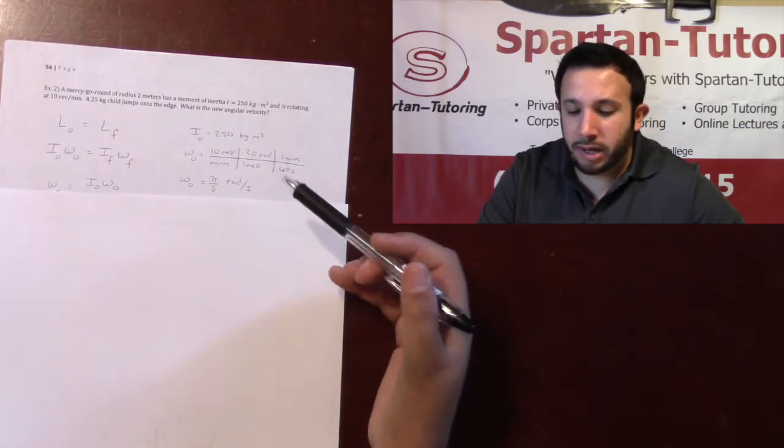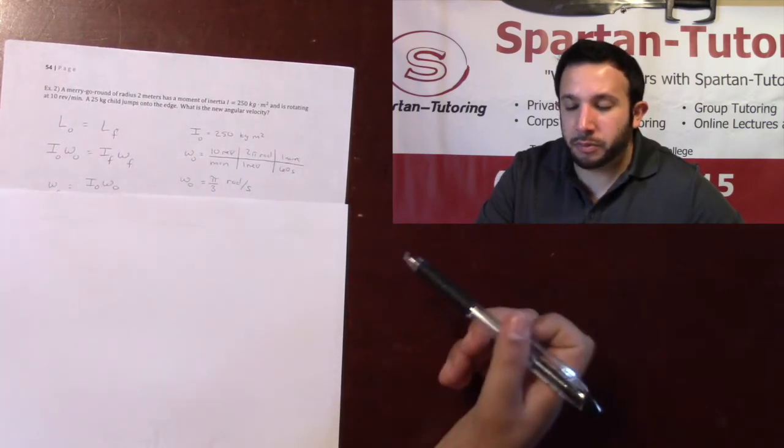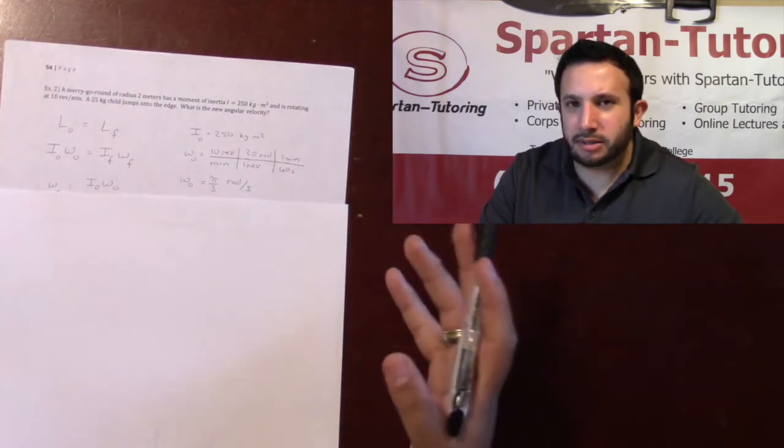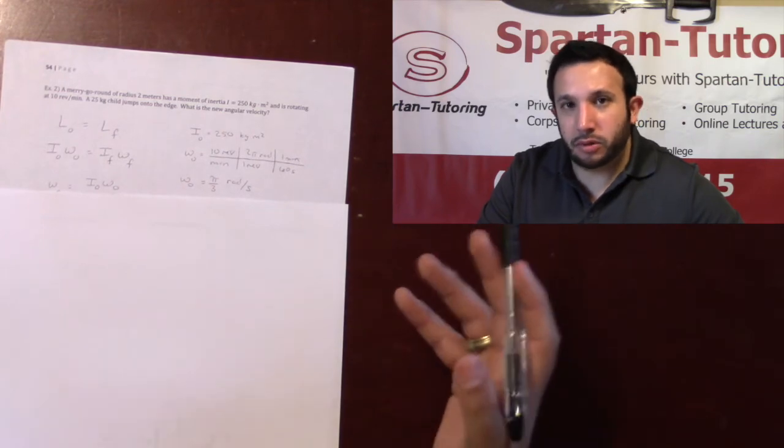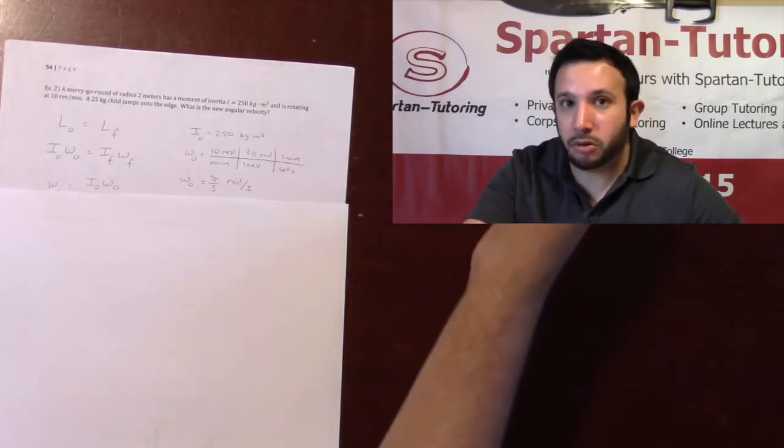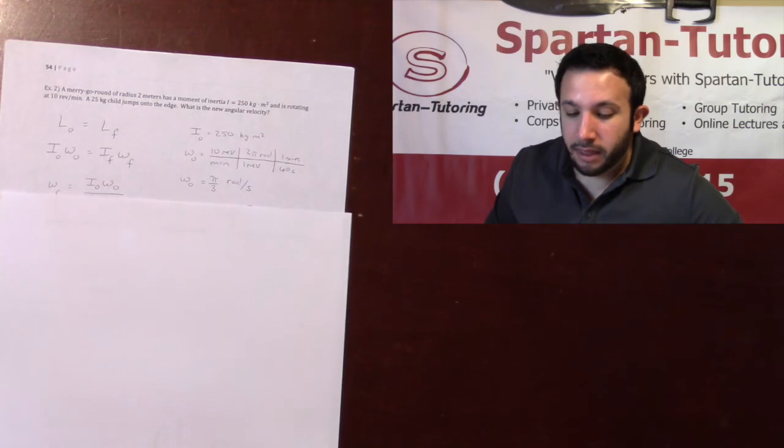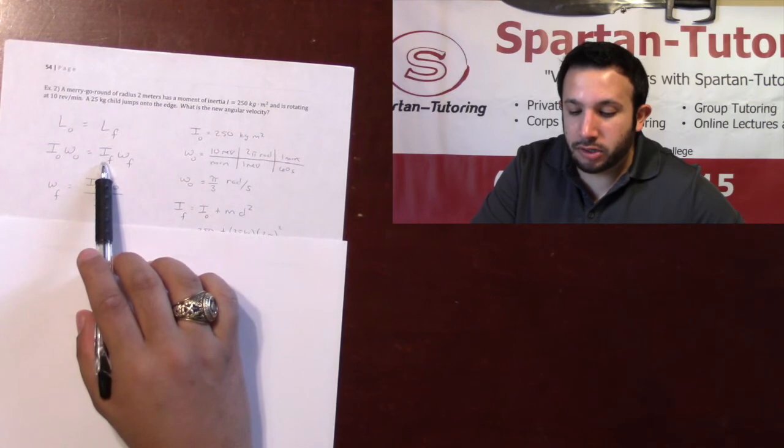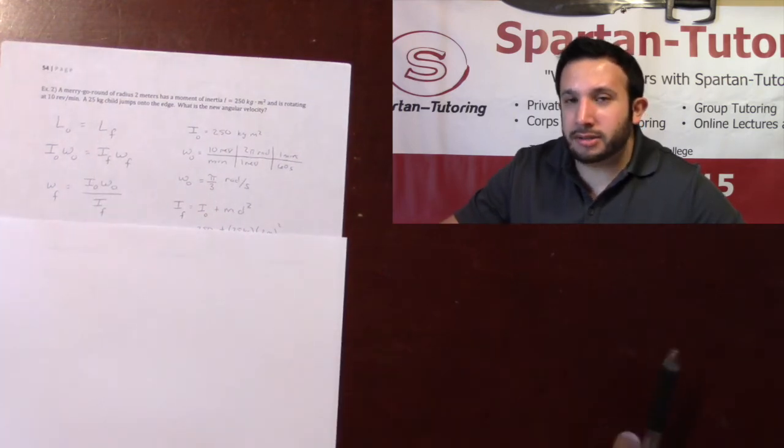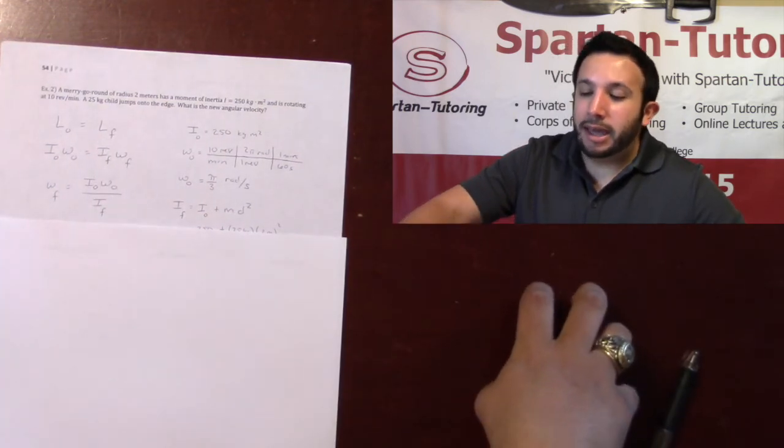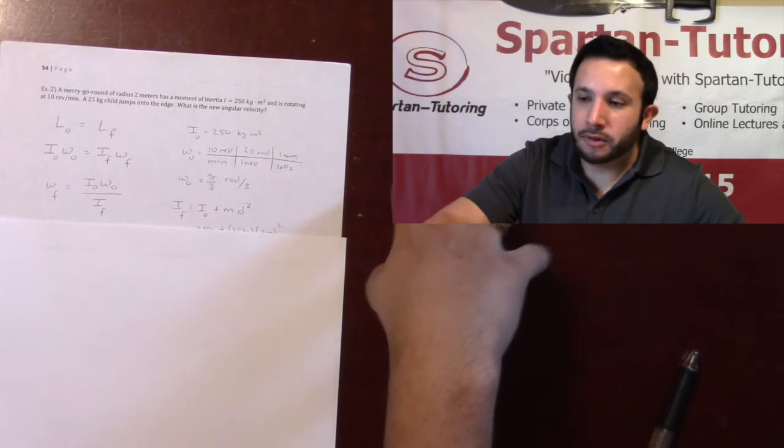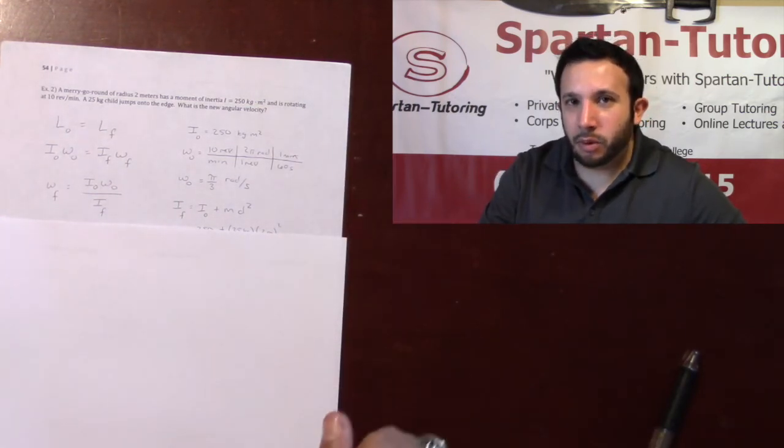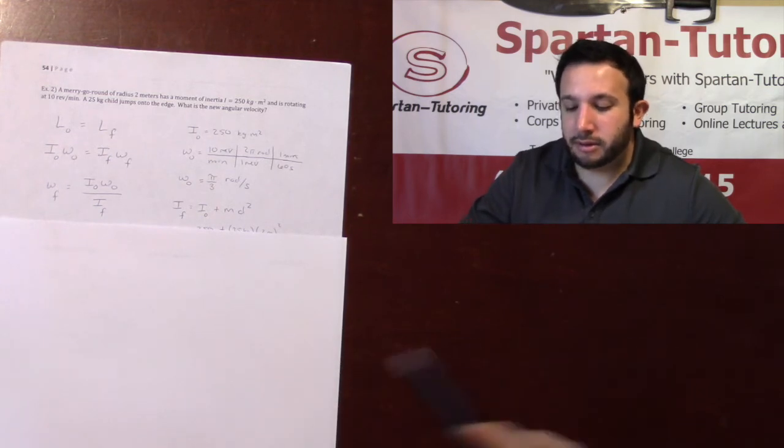In this situation, you don't have to convert. You want to keep it in revolutions per minute? Be my guest. I just like the radians per second because it's a lot more flexible. You can do a lot more things with it in case they ask follow-up questions after this. Now, the last thing I need is I need my final moment of inertia. And because that child is like an external object, and attached himself, or herself, to the edge of that merry-go-round, that now affects the moment of inertia, and it's time to use parallel axis theorem.